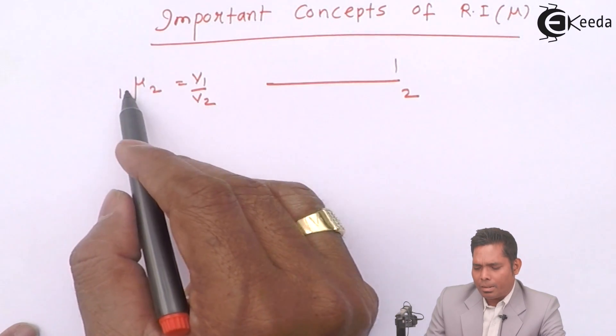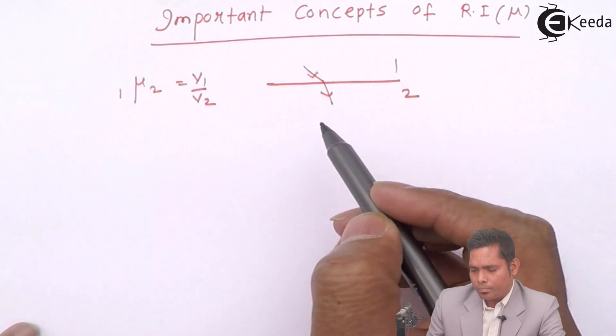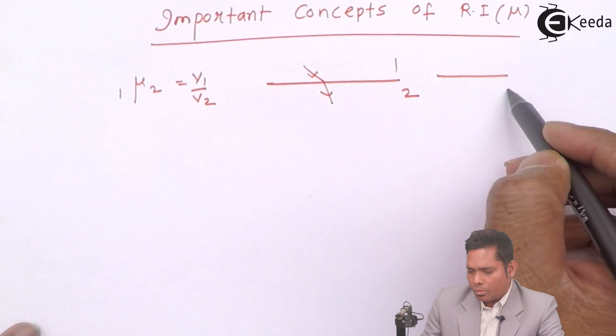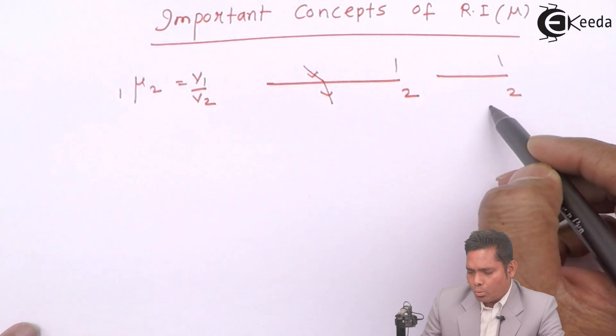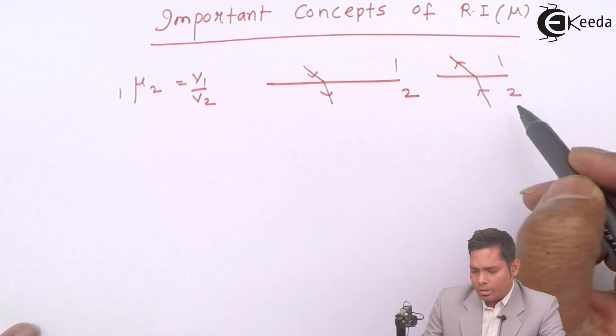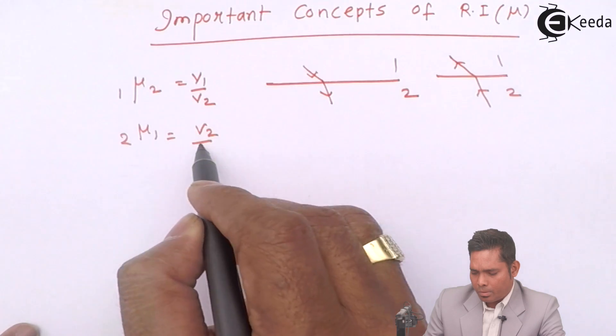You write this when light travels from 1 to 2. If light travels from 2 to 1, then I write μ₂₁, this is V2 upon V1.